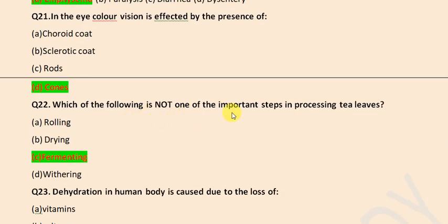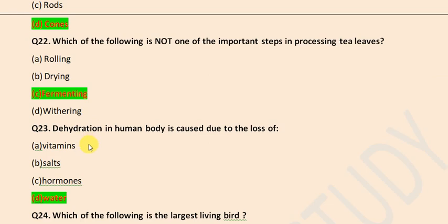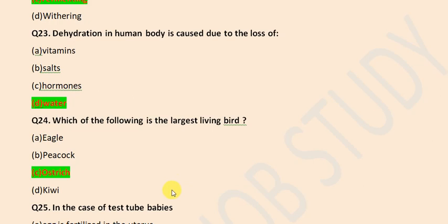Which of the following is not one of the important steps in processing tea leaves? It is fermenting. Dehydration of human body is caused due to the loss of water.